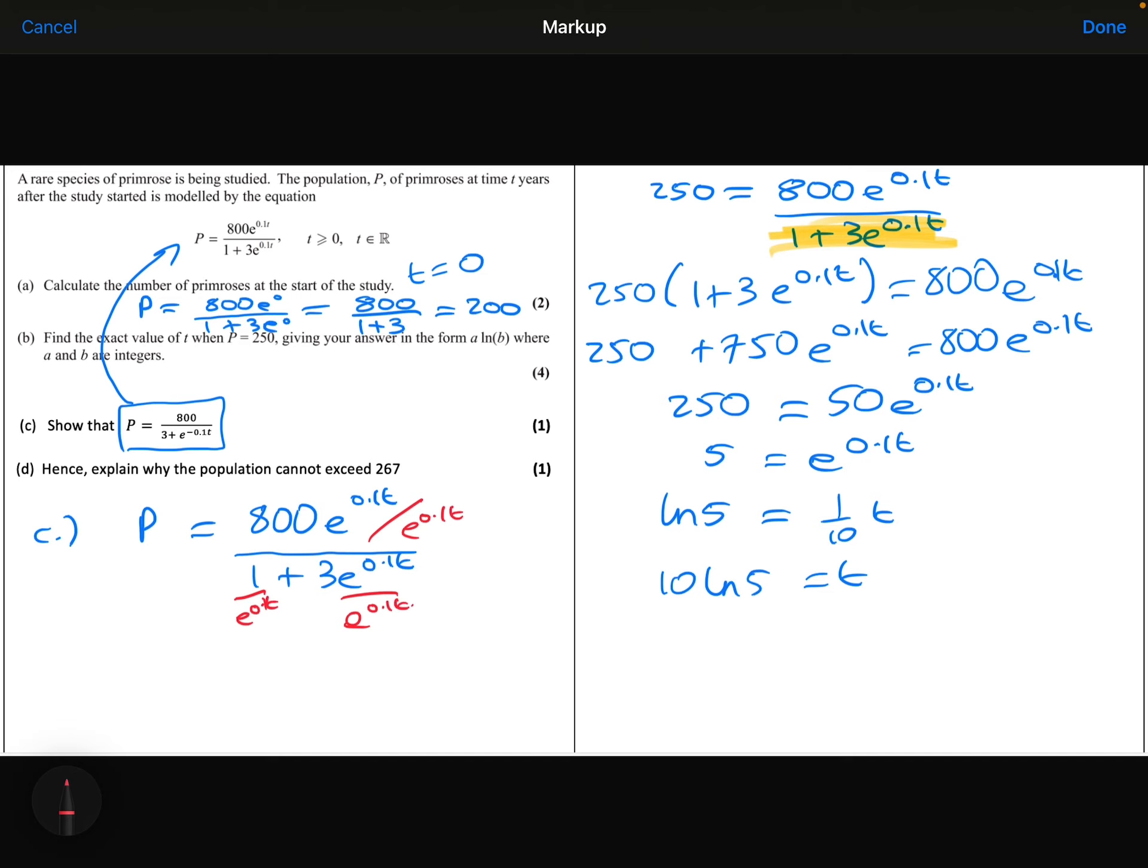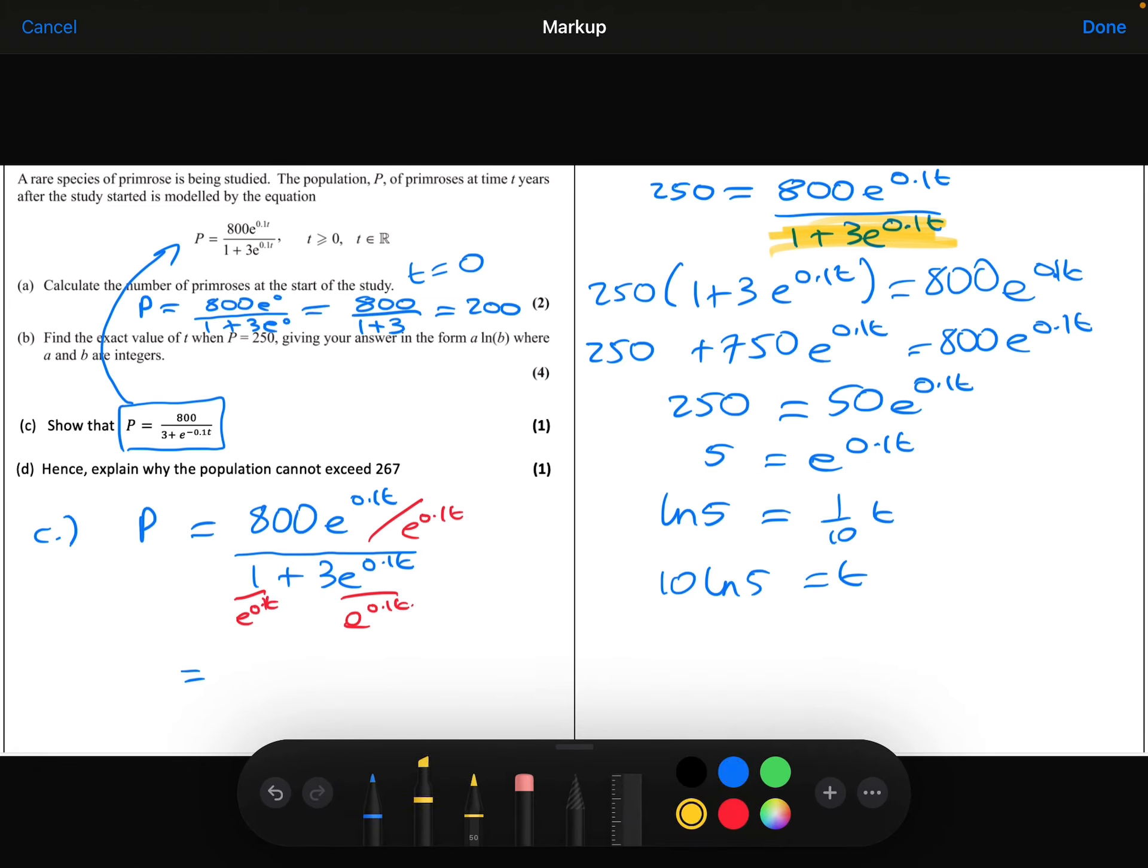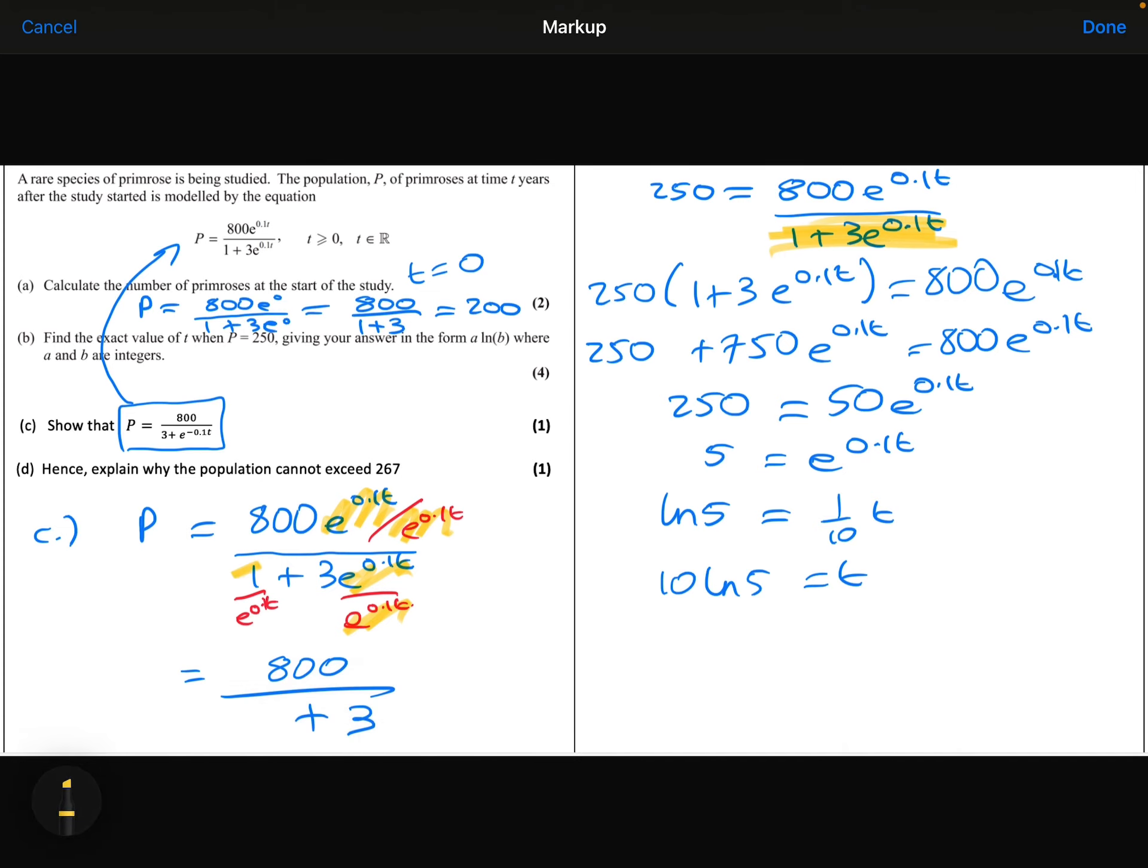Let's see the consequences of that. So the 800 e to the 0.1t divided by e to the 0.1t. Well, these terms will just cancel out and I will just get 800. Similarly, on the bottom, the 3 e to the 0.1t divided by the e to the 0.1t will now just be 3.